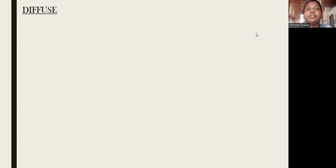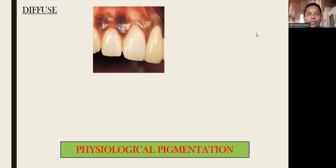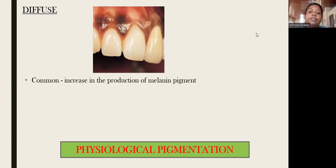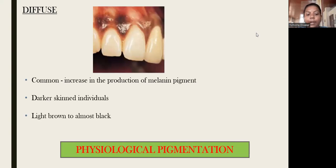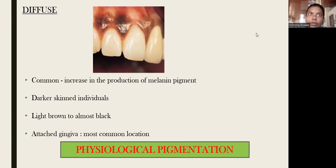Moving on to diffuse lesions of oral and perioral pigmented lesions. First is physiologic pigmentation. As the name suggests, it is not pathological; it is physiologic and commonly seen in all individuals. It is due to increased production of melanin pigment, most commonly seen in dark-skinned individuals. It is light brown to almost black in color, and the most common location for physiological pigmentation is the attached gingiva.